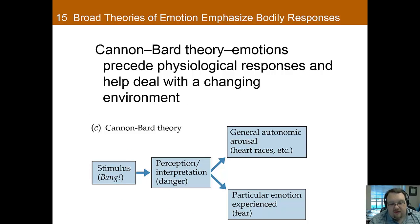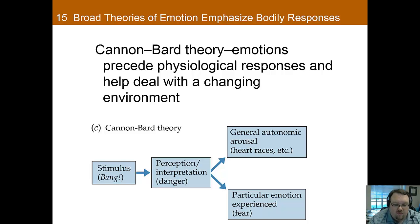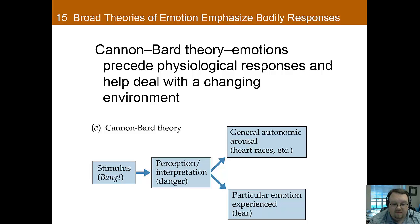Cannon and Bard developed their theory in opposition to the James-Lange theory, because they believed that since autonomic changes take time to occur, the emotion likely begins long before one's autonomic response is ramped up. Further, they argued that the autonomic arousal is virtually the same regardless of the emotion, and thus it almost seems to be an independent piece of the puzzle. Therefore, they postulated that arousal and emotion come into the picture at the same time, and that one's interpretation of the situation is what determines what emotion is experienced. Here, the cerebral cortex decides the emotional response and then activates the sympathetic nervous system.